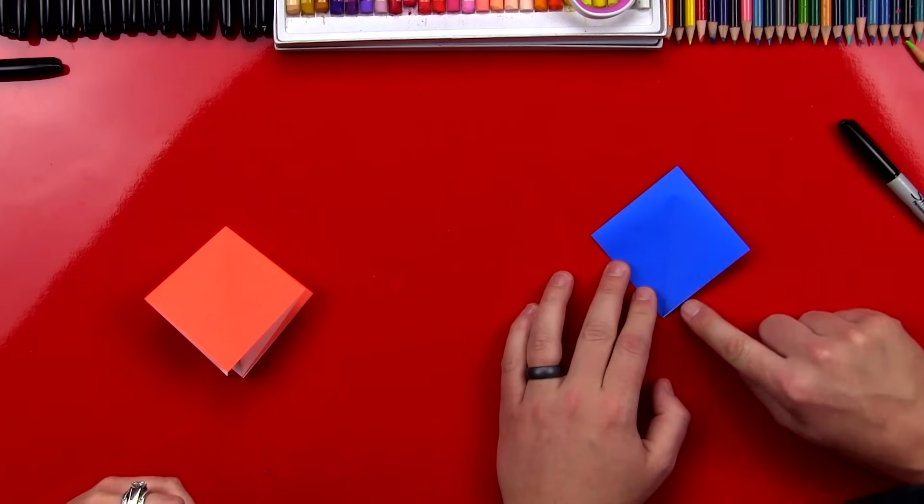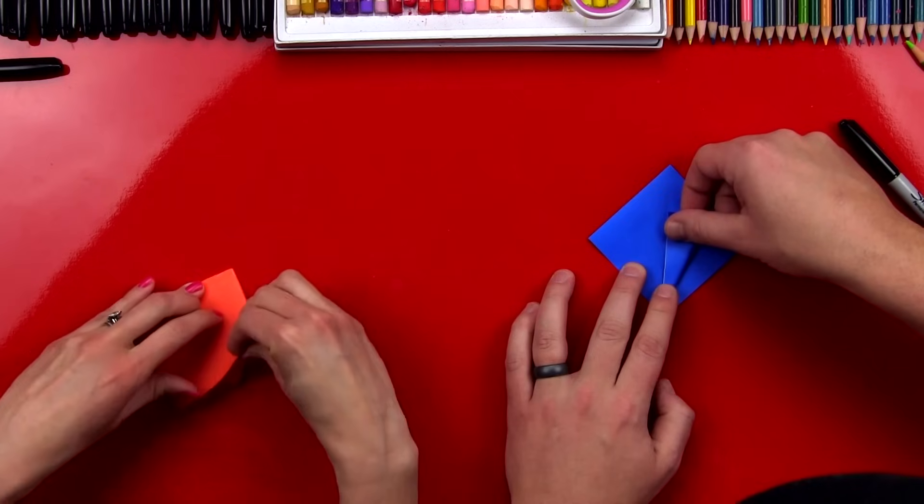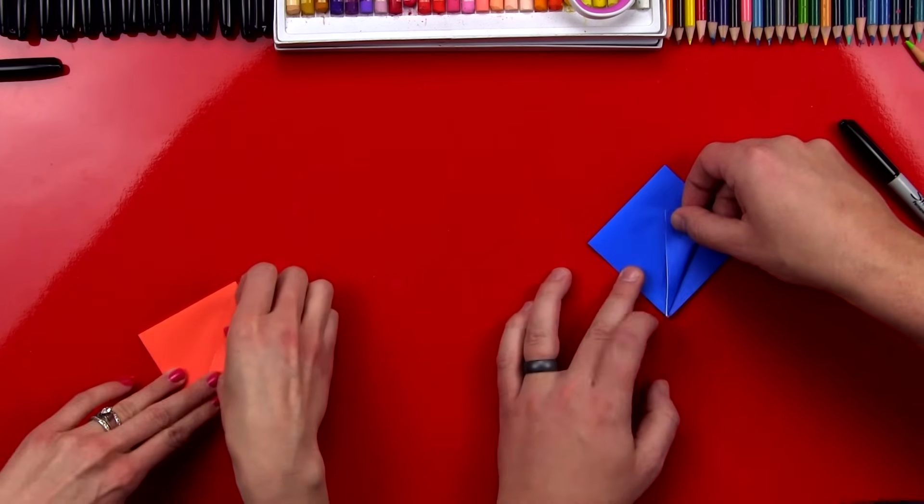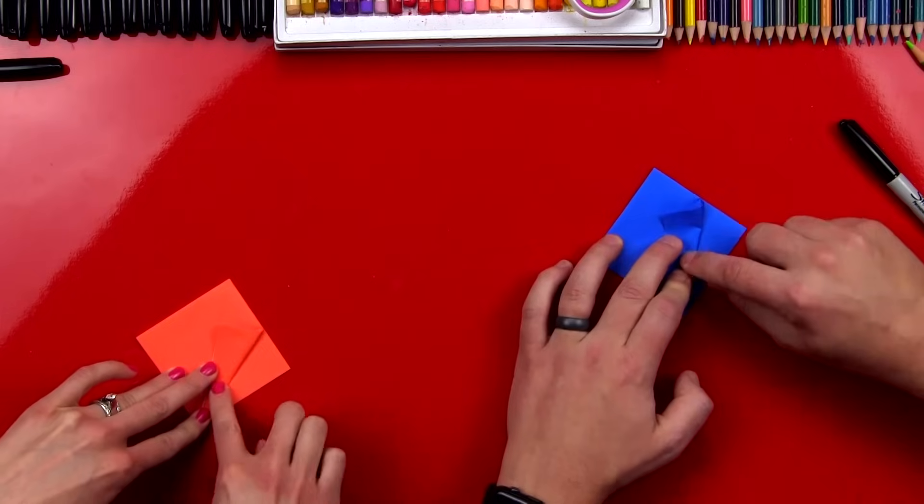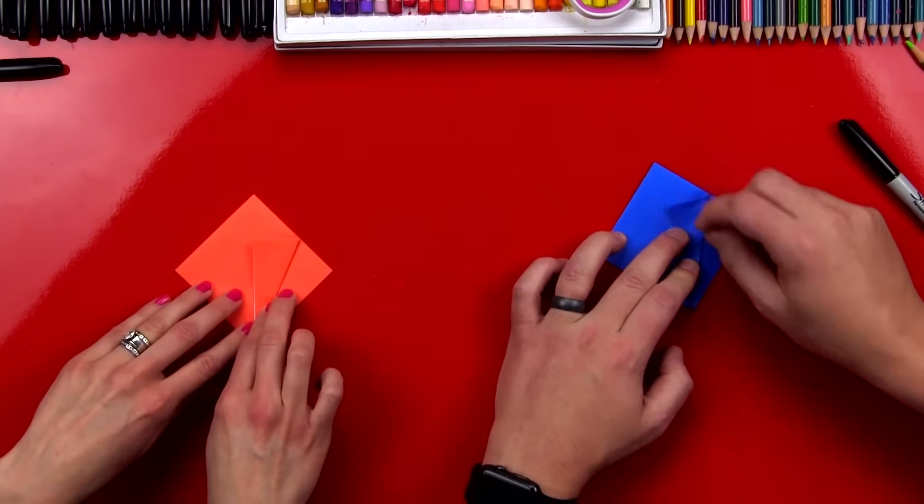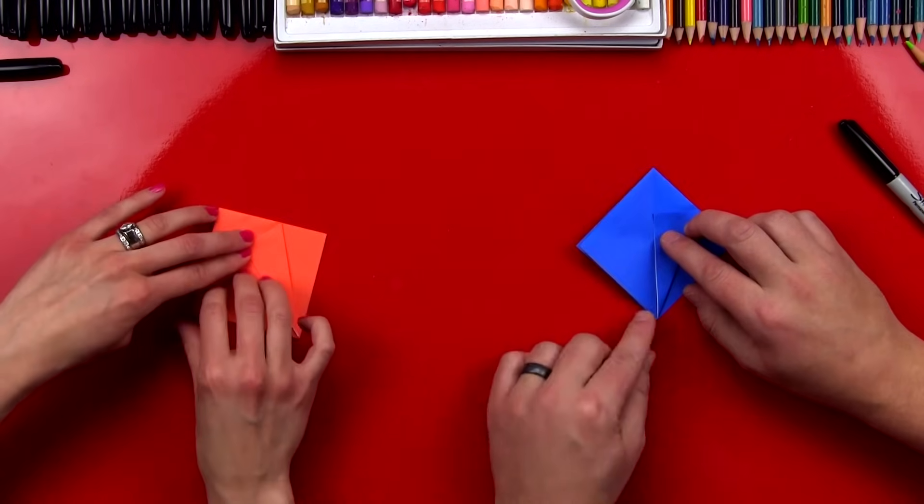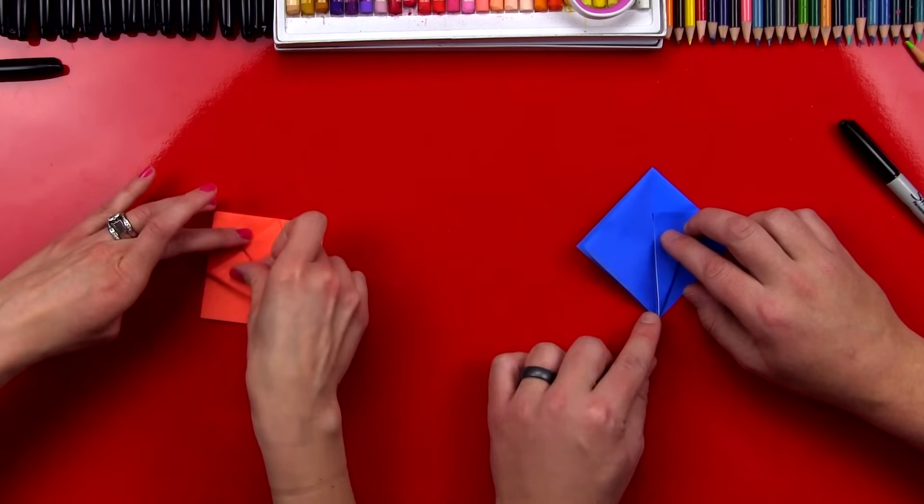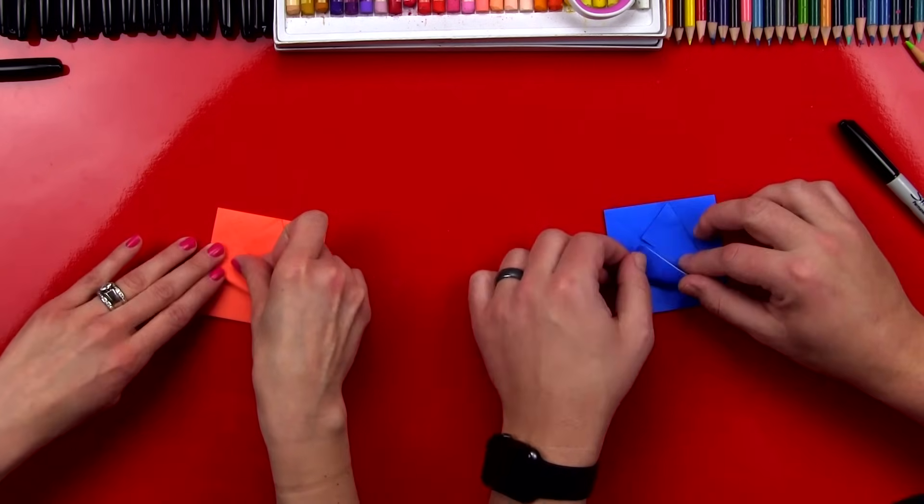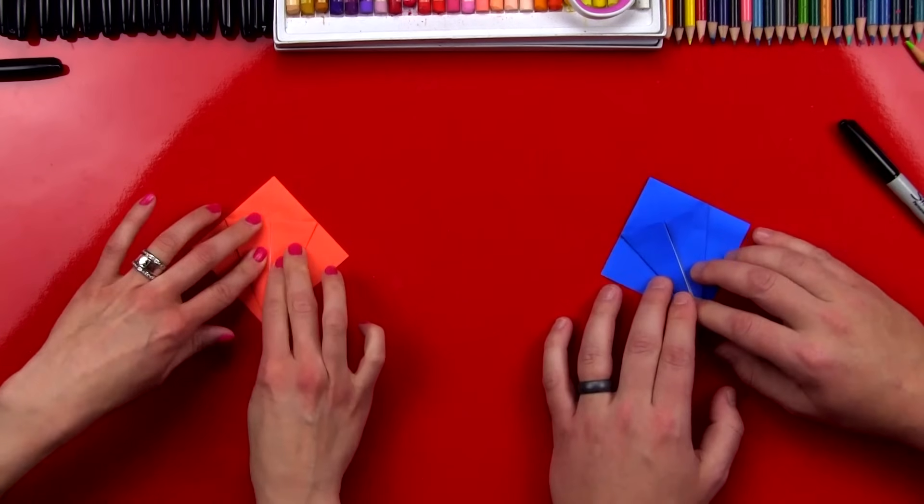Okay, now we're gonna take this edge right here and we're gonna fold it to the middle. And we'll crease it down. Oh, and I forgot to mention, you also need scissors for this lesson. We're gonna use them a little later. And then we're gonna repeat that same step on the other side. So we'll take this edge and fold it to the middle. Good job! Thank you, Mr. Rob.